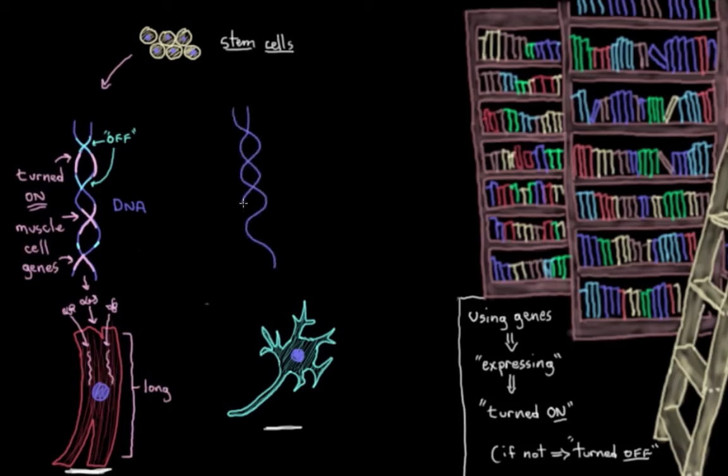And our neuron here, our stem cell turned on its become a neuron genes, and it turned off some other ones. And then the cell started producing all the proteins it needed to turn into a neuron. Like the proteins that would make it elongate like this and grow out these little spiky things up here called dendrites.